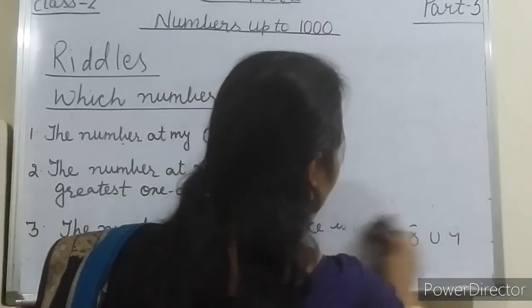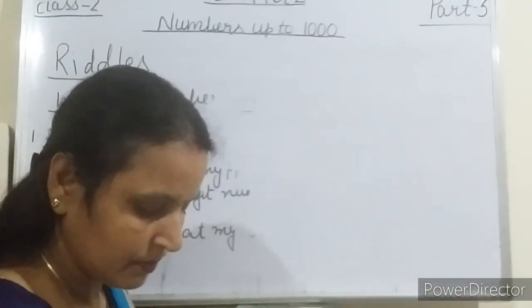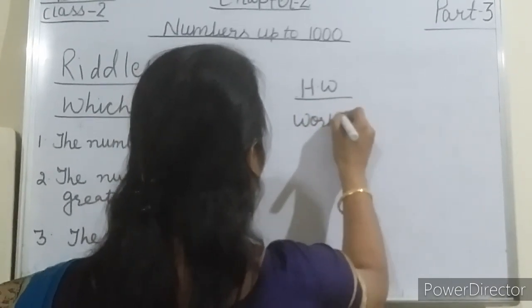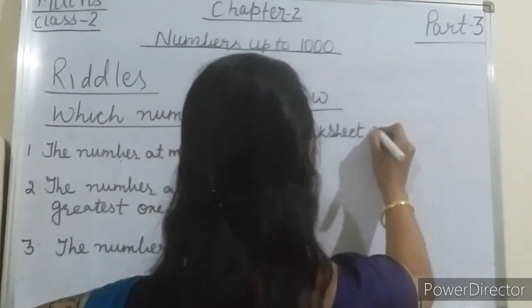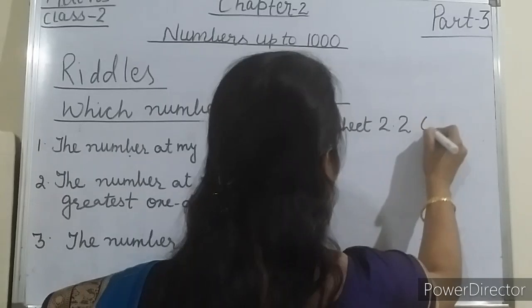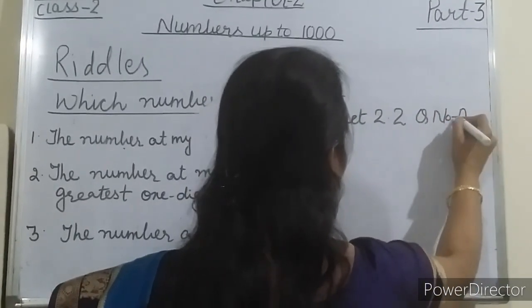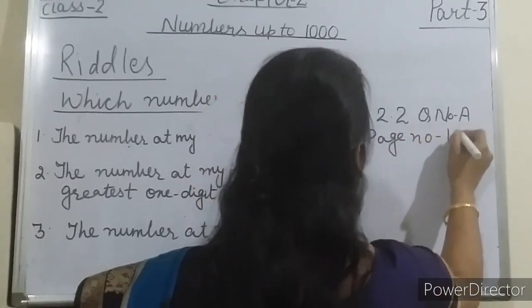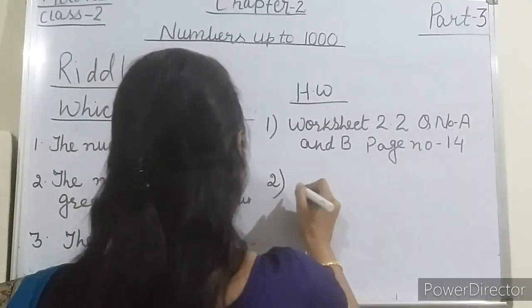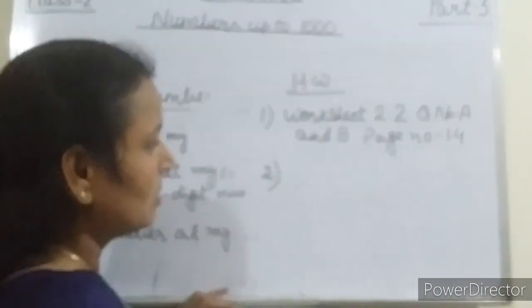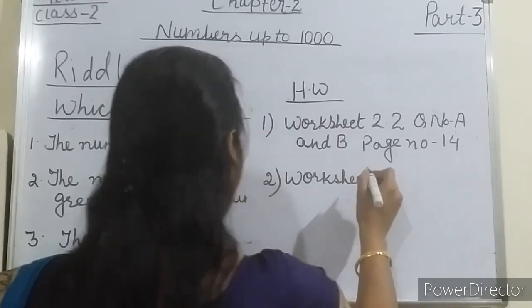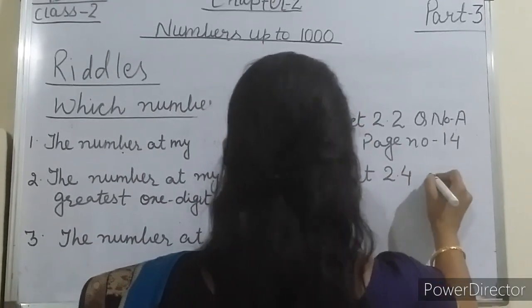Now I am giving you homework. So students, write down your homework. Your homework is worksheet 2.2, question number A and B, page number 14. This is your first homework. And the second homework is for number names and numerals — write worksheet 2.4, question number A.